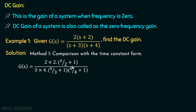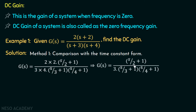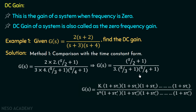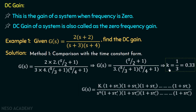We have taken 2 common from the numerator term, 3 common and 4 common from the denominator terms. If we solve this, 2 multiplied with 2 will equal 4, and 4 and 4 will get cancelled. So we will have G(s) equal to (s/2 plus 1) divided by 3 multiplied with (s/3 plus 1) multiplied with (s/4 plus 1). We have this transfer function in the time constant form, and comparing it to the standard time constant form, we can say the value of k is 1 over 3, which is equal to 0.33. In the standard time constant form, k represents the DC gain of a system.